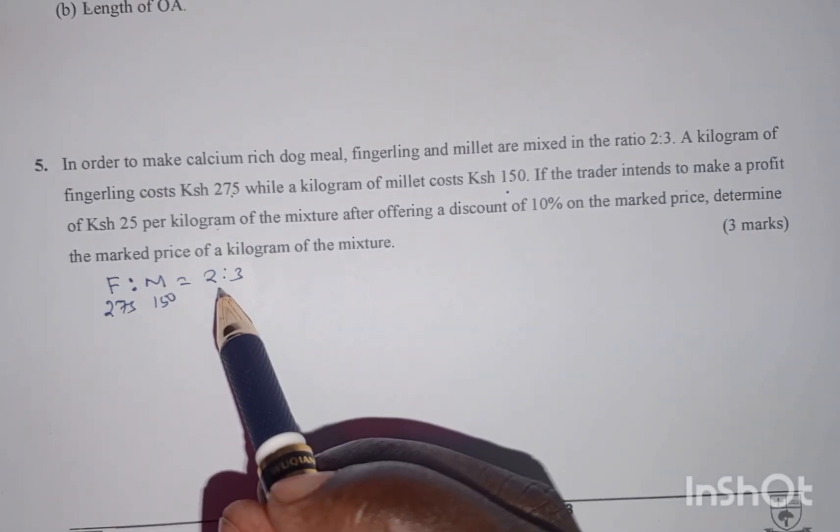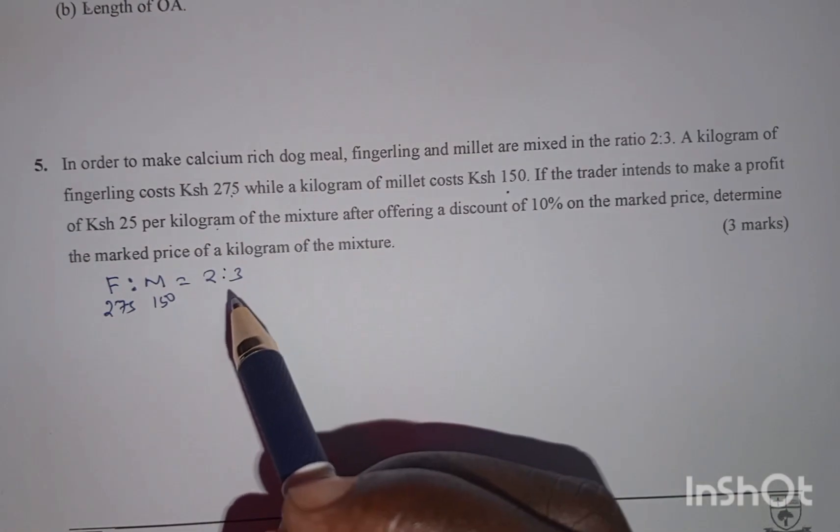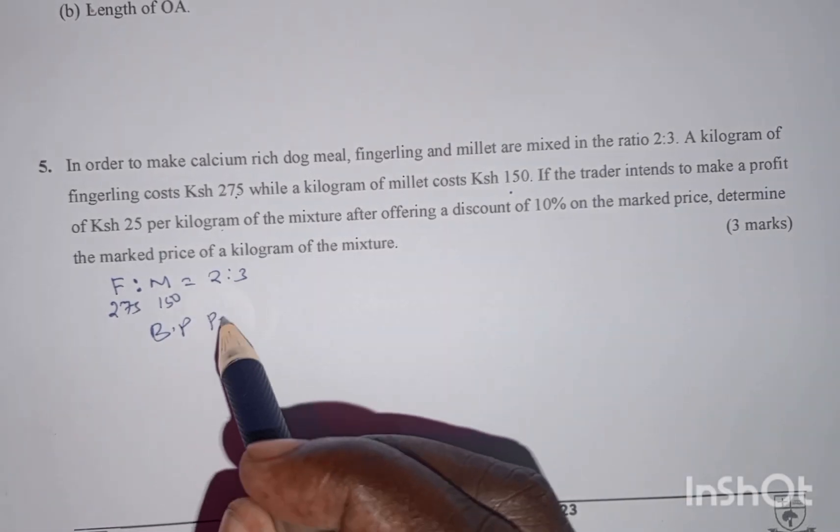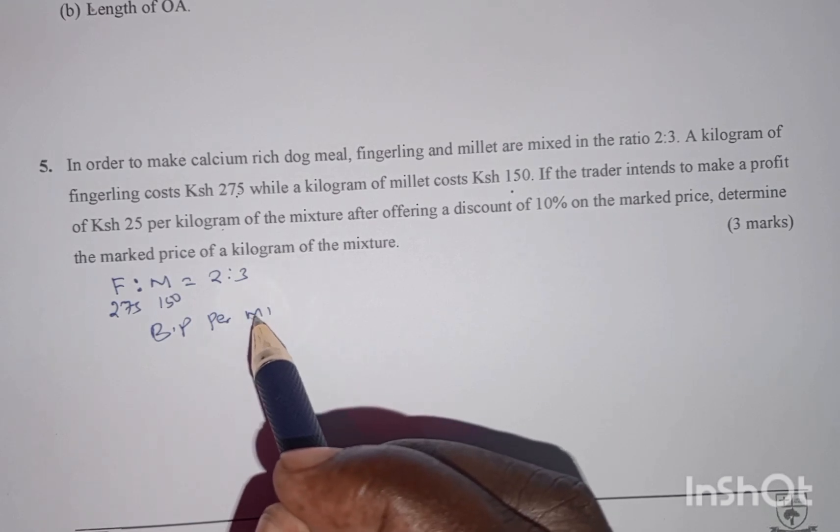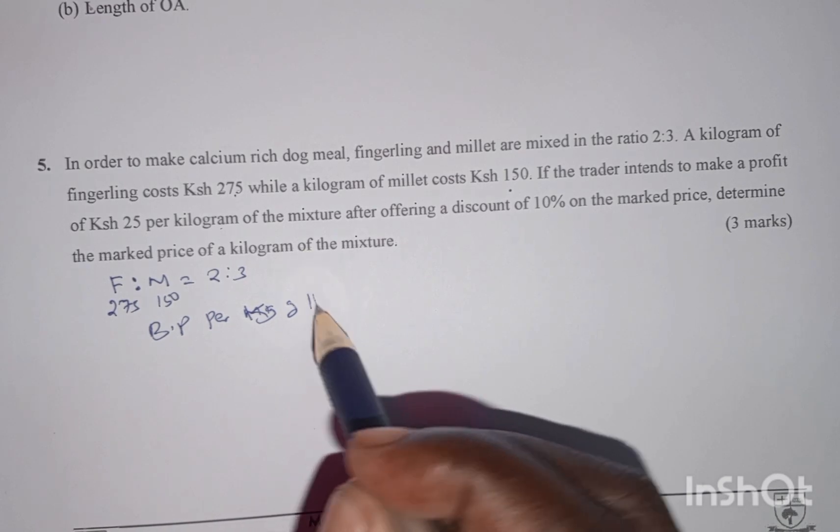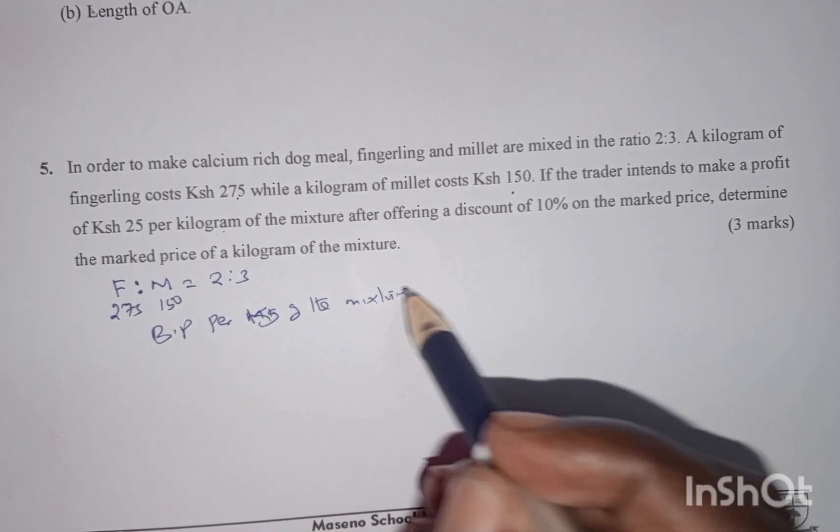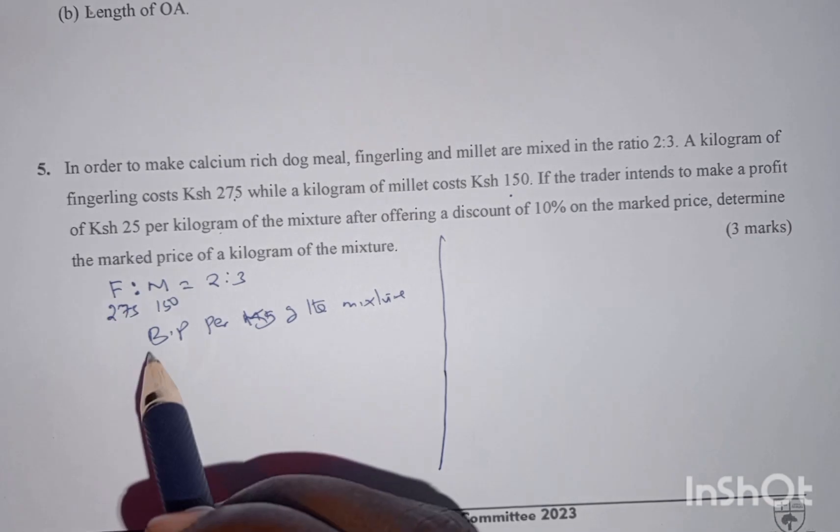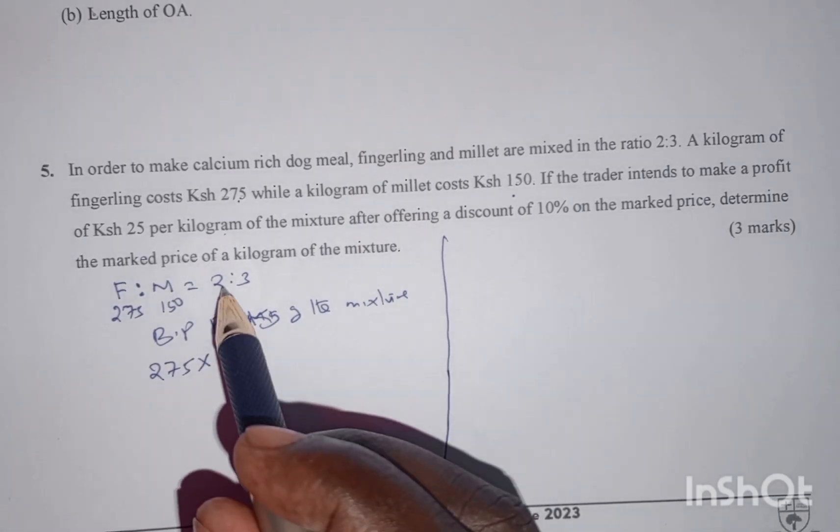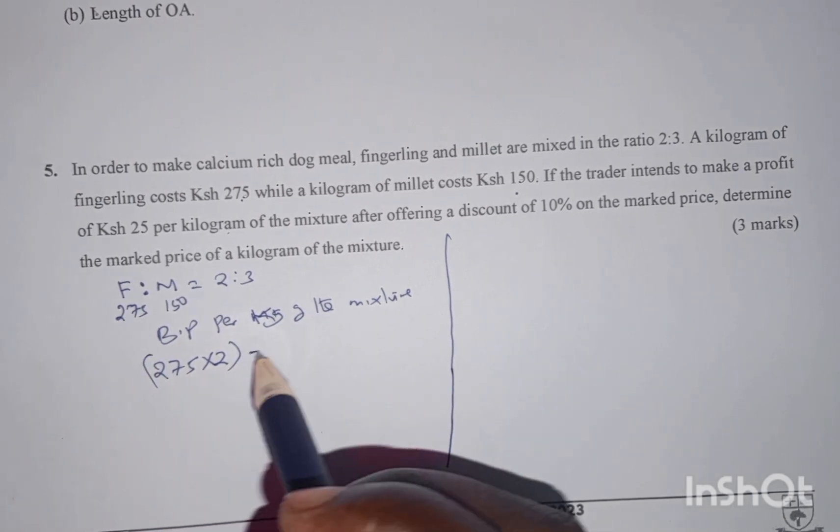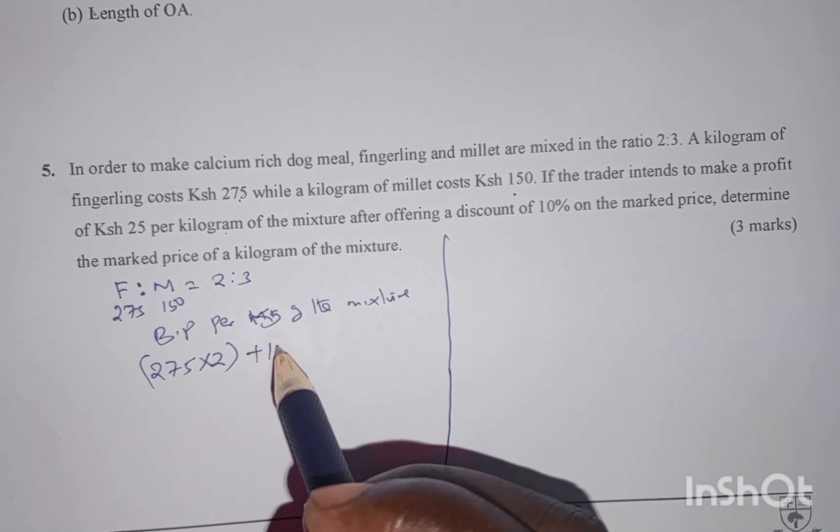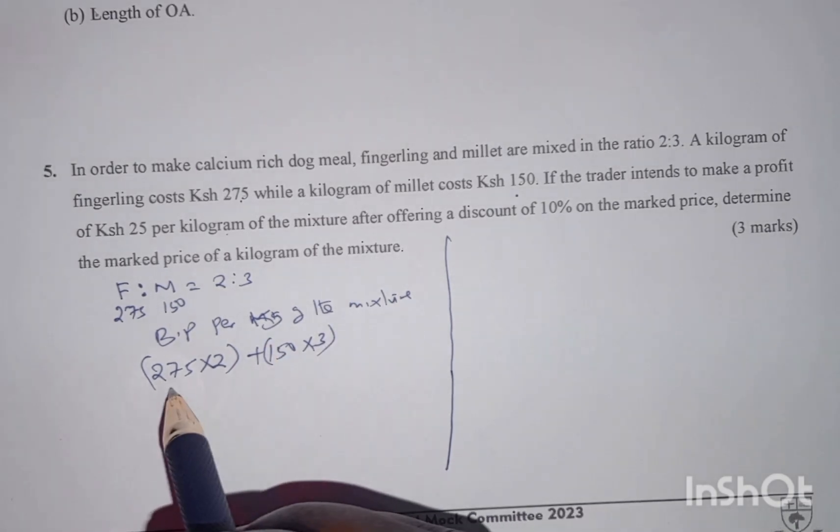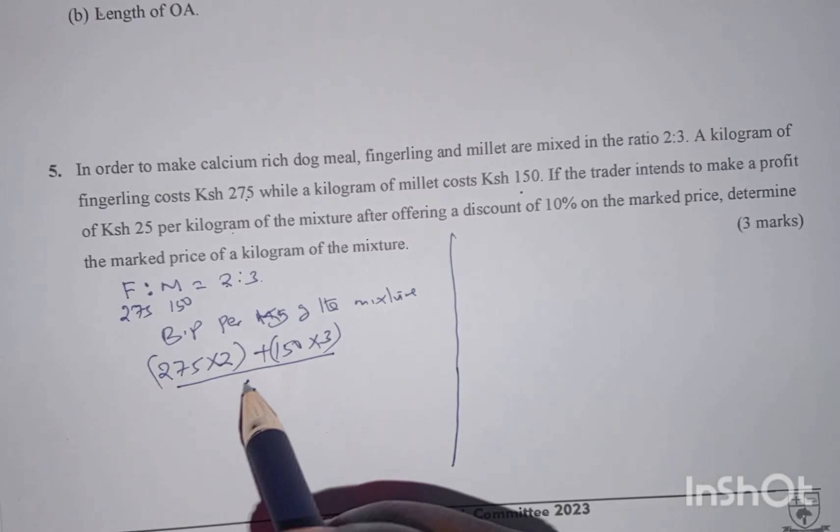Remember the ratio represents the quantity, and therefore we can now find the cost price or simply the buying price per kg of the mixture. To find the buying price, we have a kg of fingerling at 275 and we are buying two. We add the cost for the millet, 150 per kg. The ratio denotes that we bought 3. We divide by the total number of kg which is 2 plus 3 giving us 5.